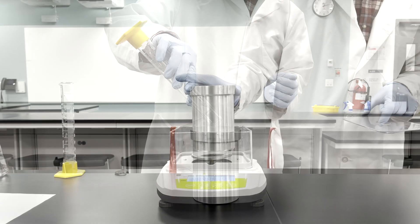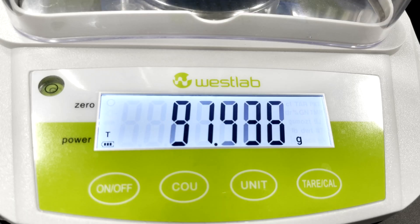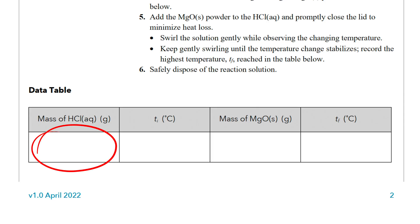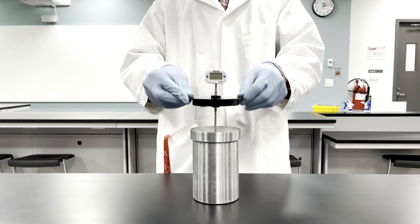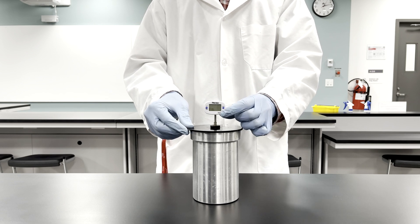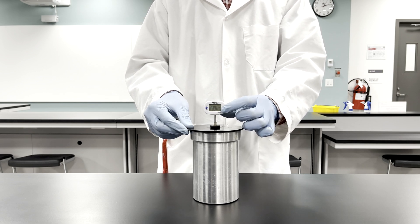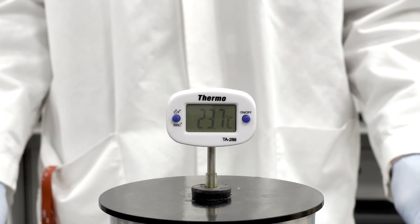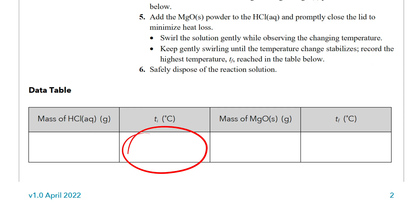The mass of the solution inside the calorimeter is measured. Record this value in the data table. Note the temperature of this solution in the calorimeter—this is the initial temperature. Record this value in the data table.